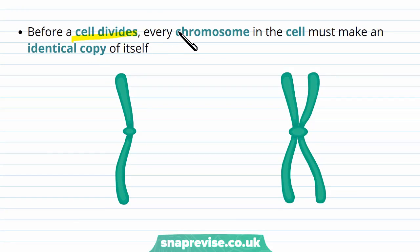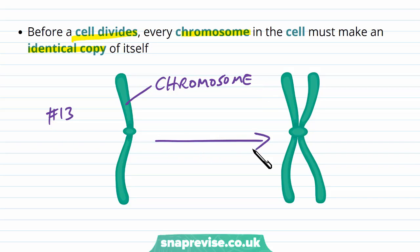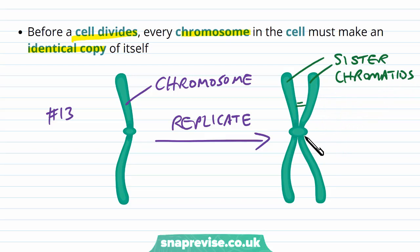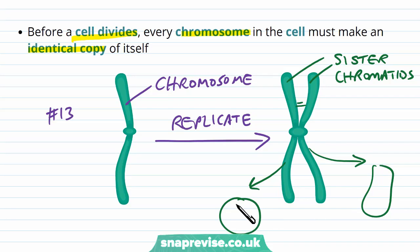Before a cell divides, every chromosome must copy itself. For example, chromosome number 13 needs to replicate, producing two sister chromatids that are identical to each other. During cell splitting, one chromatid goes into one daughter cell and the other chromatid goes into the other, so you end up with two cells each again having one of each chromosome.